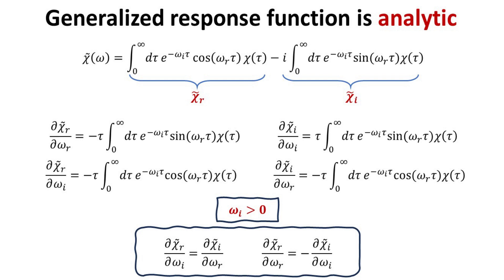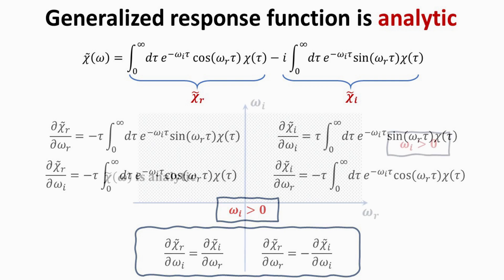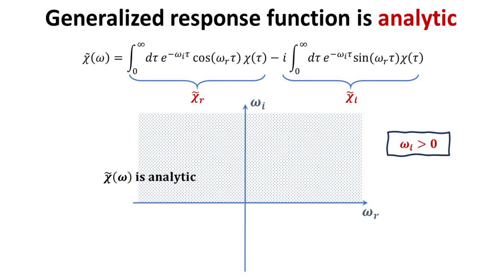With this, it is easy to check that the Cauchy-Riemann relations for the generalized response function are exactly satisfied. Thus, we have shown that the generalized response function is indeed analytic in the upper half of the omega complex plane, where omega i is positive.